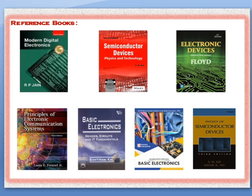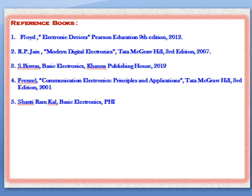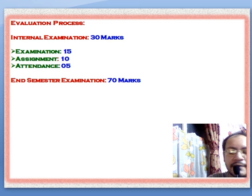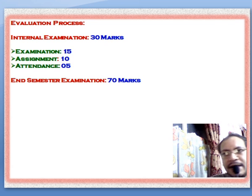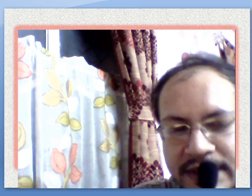These are the possible reference books you can refer to. The evaluation process: students have to appear for 70 marks in the semester exam and 30 marks as an internal exam, out of which 15 marks for the exam, 10 for assignment, and 5 for attendance. I hope all of you have enjoyed today's class. In the next class, I will start the oscillator circuit. Thank you.